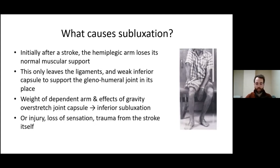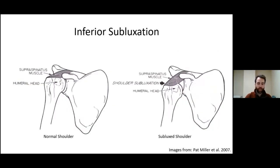There could be further damage or subluxation from events surrounding the stroke itself — a common example is a patient falling onto that affected side. Here's a simple image demonstrating the anatomy of the subluxed shoulder. We're looking at a glenohumeral joint with the supraspinatus muscle on top — one of the rotator cuff muscles crucial to protect the shoulder from gravity. On the left that's a normal protected muscle; on the right that muscle has lost its tone and is stretched, allowing gravity to pull the shoulder downward.